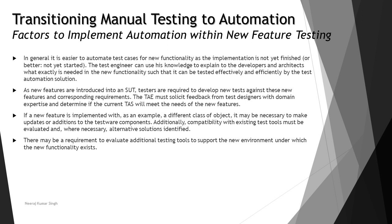Here is a list of factors to consider when implementing automation with respect to new feature testing. In general, it is very easy to create automation tests for new functionality which is yet to be implemented. The test automation engineers can share their views with the development organization — what properties they expect each object or functionality to have — so that the tool can easily recognize them and it will be easy to create the automation tests and framework.